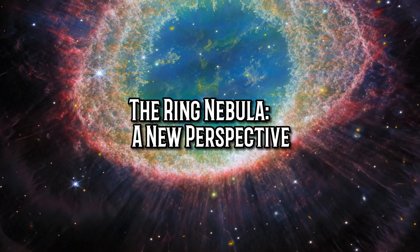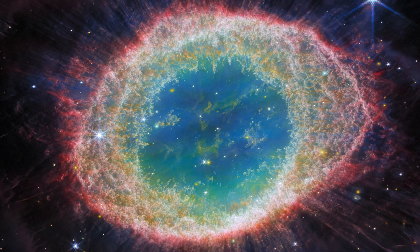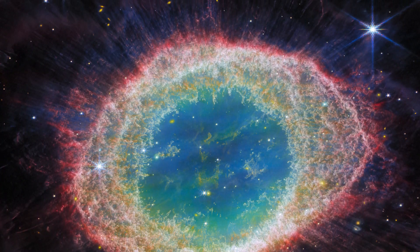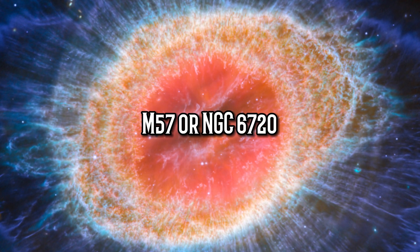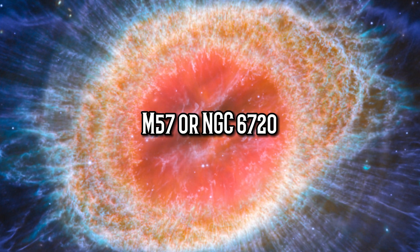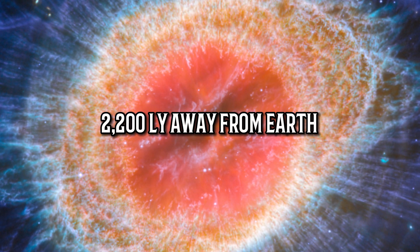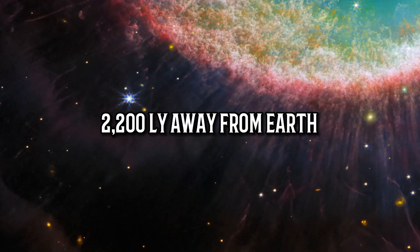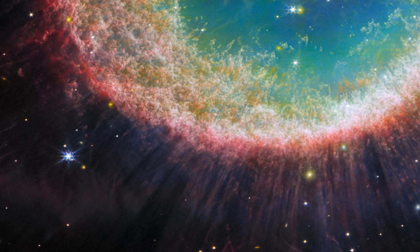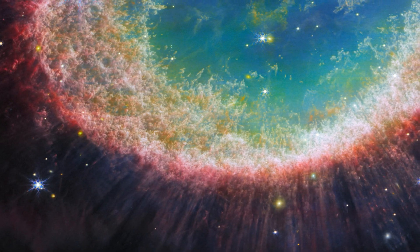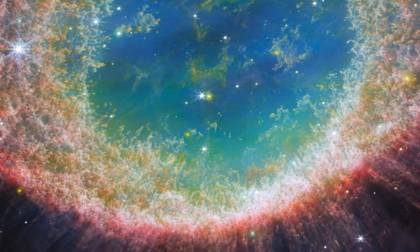The iconic Ring Nebula has always been a breathtaking sight, but the James Webb Space Telescope has just captured it in an unprecedented new light. This eye-shaped planetary nebula, also known as M57 or NGC 6720, is located just 2,200 light-years away in our cosmic backyard. Despite its name, the Ring Nebula has nothing to do with planets. It formed when a red giant star reached the end of its life and began to shed its outer layers of gas into the surrounding space.